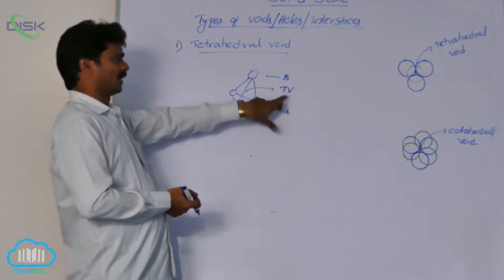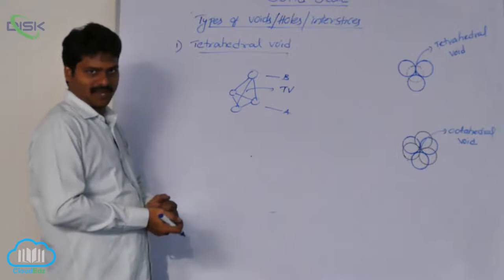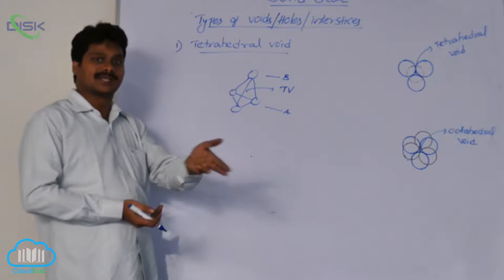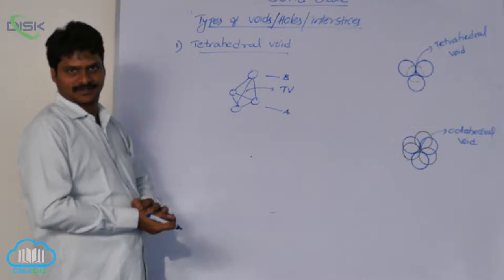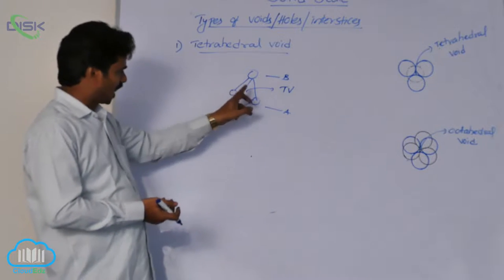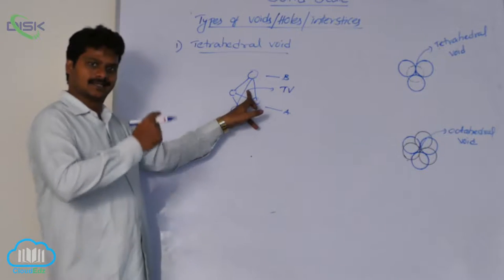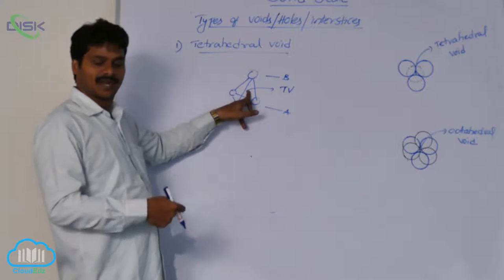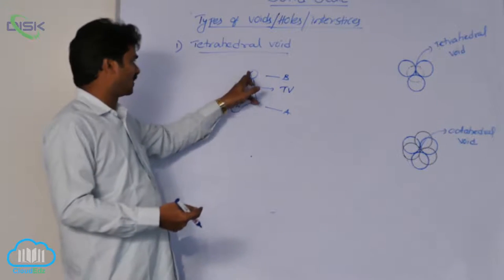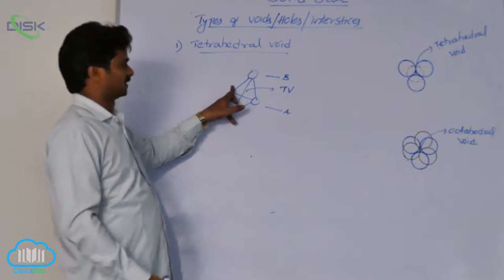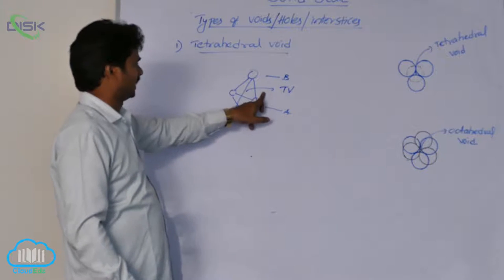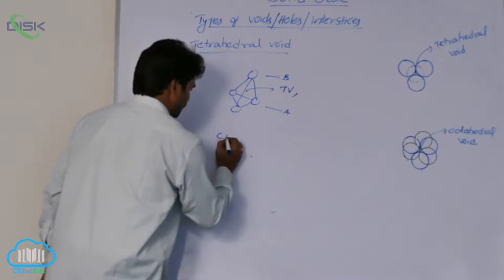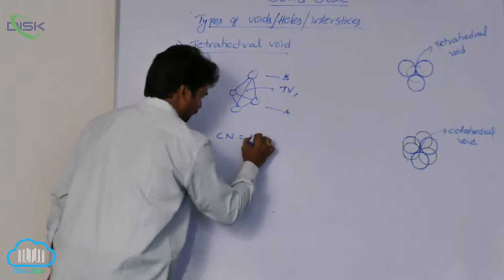What is the coordination number of a tetrahedral void? For a void, we can also define a coordination number. This void is in contact with — and formed by — how many spheres? Four spheres. That is why a tetrahedral void has a coordination number of four.